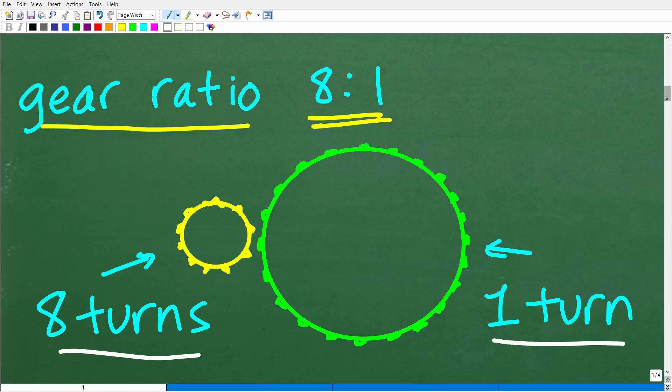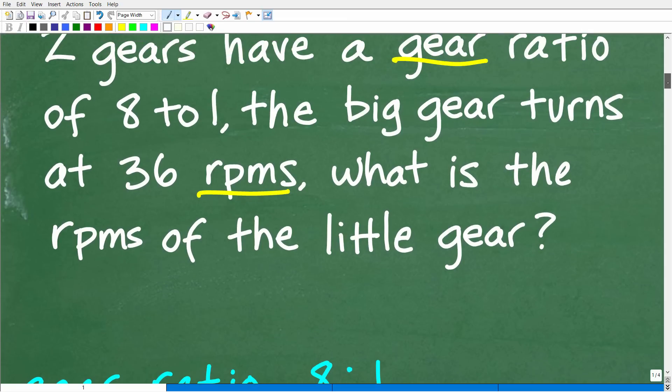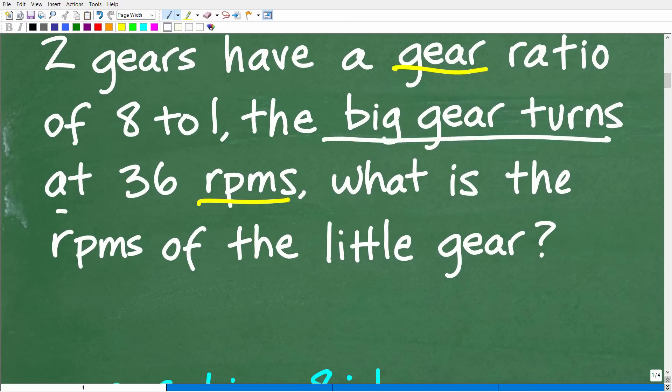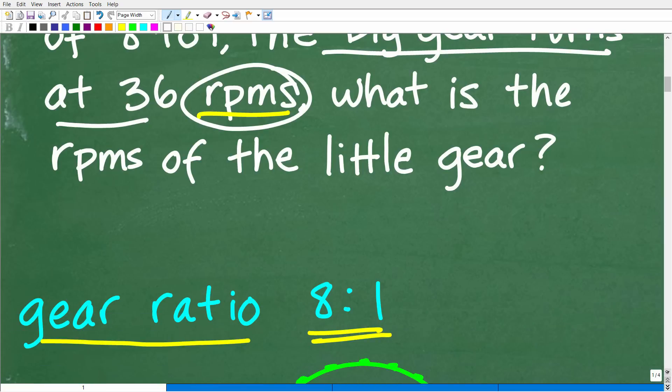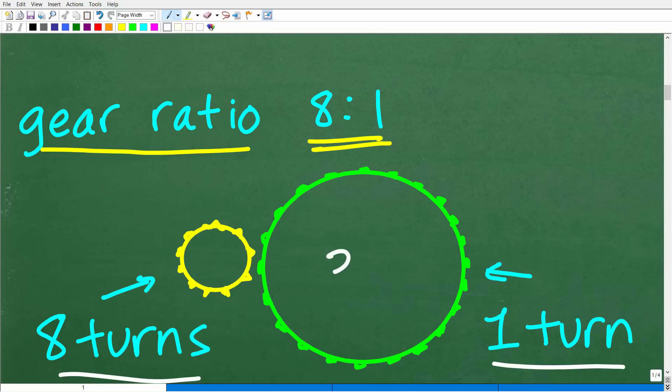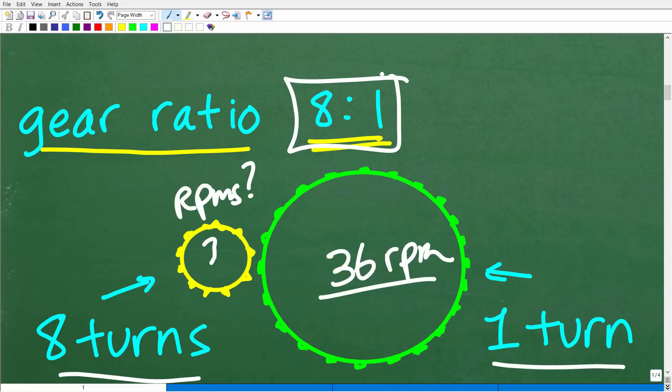We have a small gear and a big gear. In the problem it indicates that the big gear turns at 36 RPMs - this is the speed of the big gear. We can put that in our figure. So 36 RPMs is the speed of the big gear. What is the speed? How many RPMs is the small gear turning? We can figure this out because we have the ratio between the two gears - a gear ratio. How are we going to figure this out? What is a ratio in the first place?